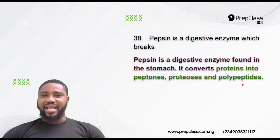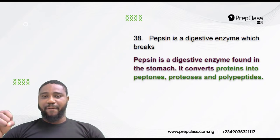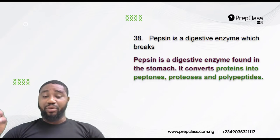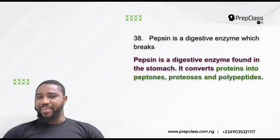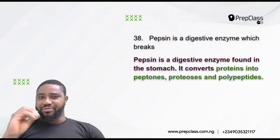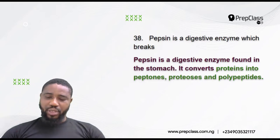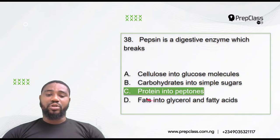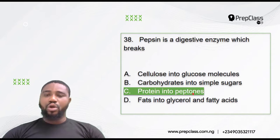There are two enzymes found in the stomach: pepsin and rennin. Rennin is responsible for breaking down milk first, curdling it, and after that pepsin acts on the curdled proteins. Pepsin acts only on proteins, digesting them and breaking them down into peptones and peptides. So the enzyme pepsin digests only proteins, breaking them into peptones. The correct answer is proteins into peptides.